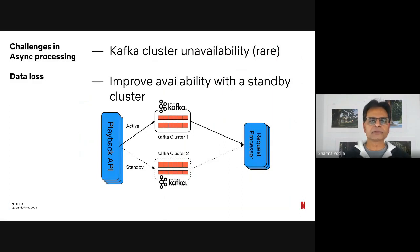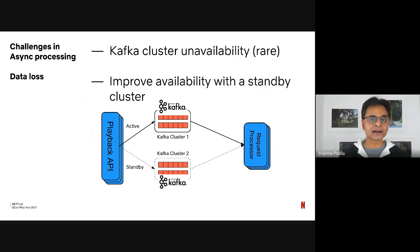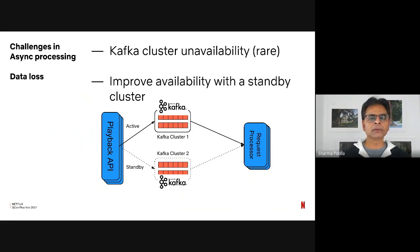When we think about data loss, there are two aspects. One is if the Kafka cluster itself becomes unavailable — you might lose data. One simple way to address that is to add an additional standby cluster. If the primary cluster becomes unavailable, the publisher — playback API — can publish into the standby cluster. The consumer, the request processor, can connect to both Kafka clusters and therefore not miss any data. The trade-off is additional cost. We categorize our playback data into two types: critical data gets the standby cluster treatment, while less critical data uses a single Kafka cluster. Kafka itself is highly available and employs multiple strategies to improve availability.